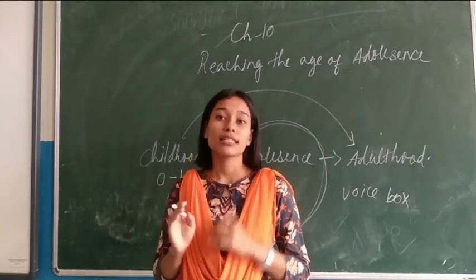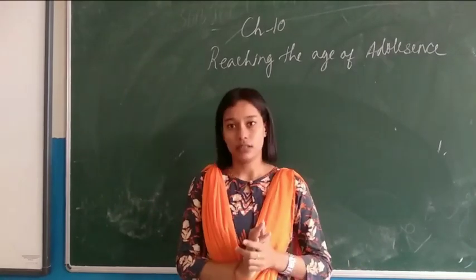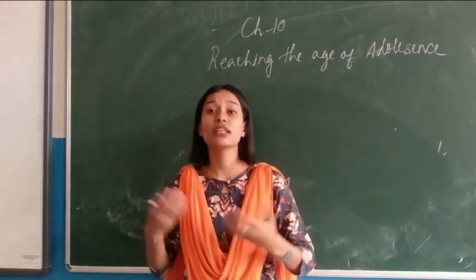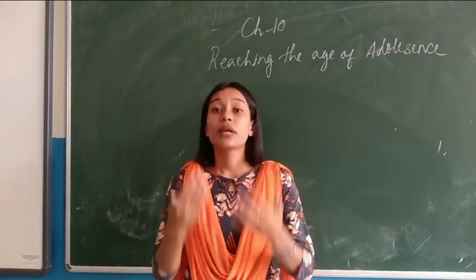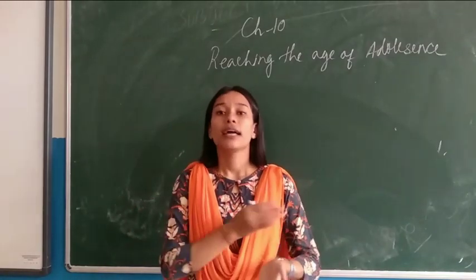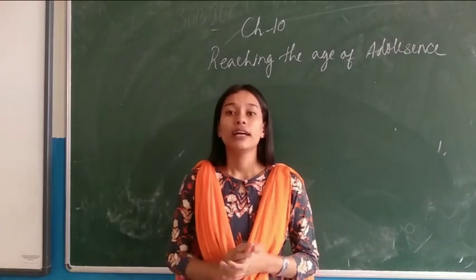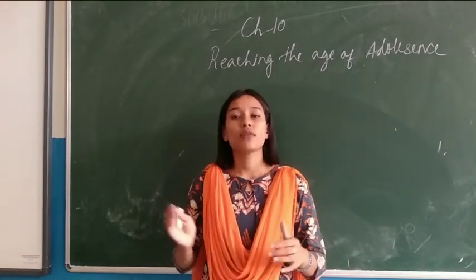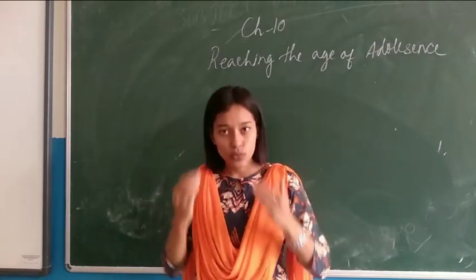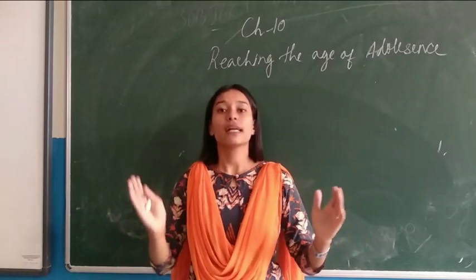Now, the secondary sexual characters are the characters which help us differentiate between a boy and a girl. In boys, facial hair begins to grow. In girls, breasts develop. Hair grows in different parts of the body - like the armpit and the area above the thigh, called the pubic region - and this can be seen in both boys and girls. In boys, hair also grows in the chest region. If a boy and a girl are standing, you can identify them by beard and mustache in boys, and breast development in girls. These are called secondary sexual characters.